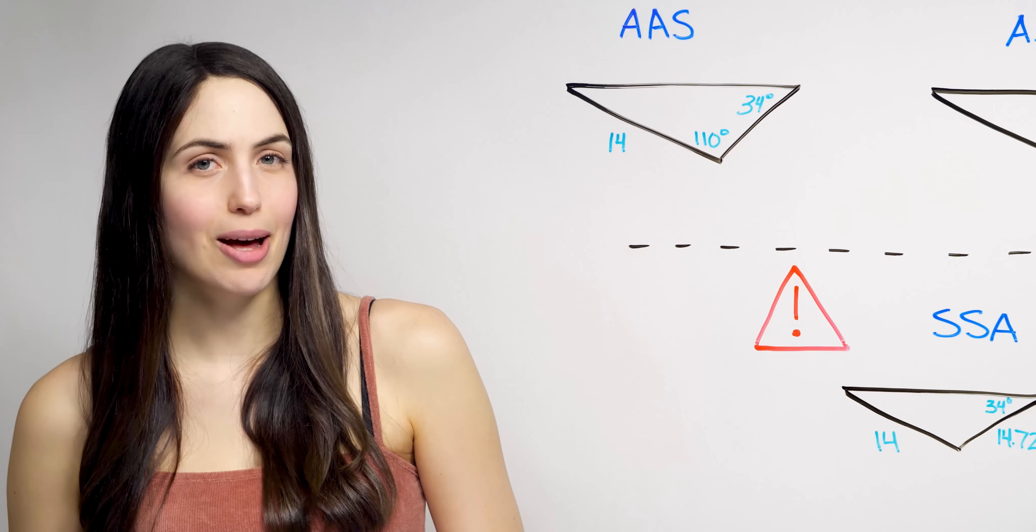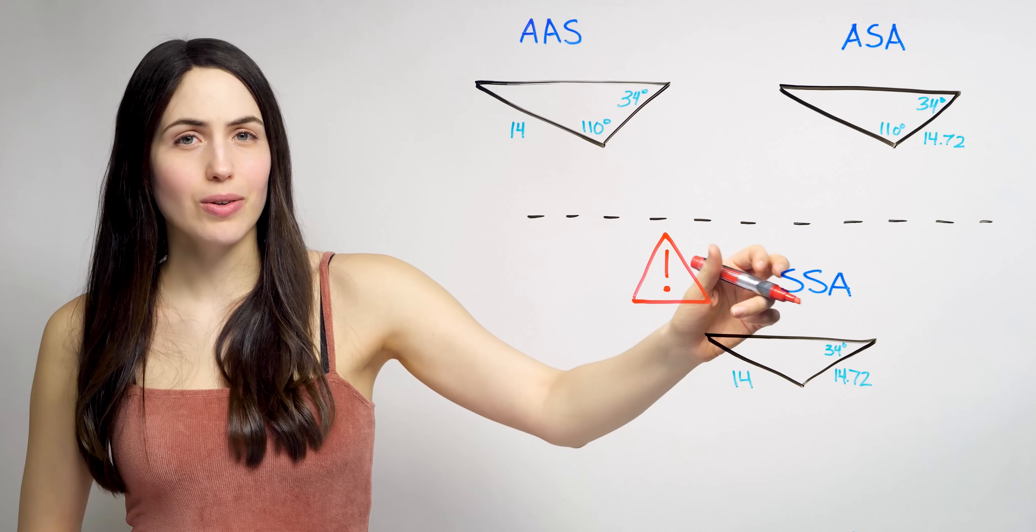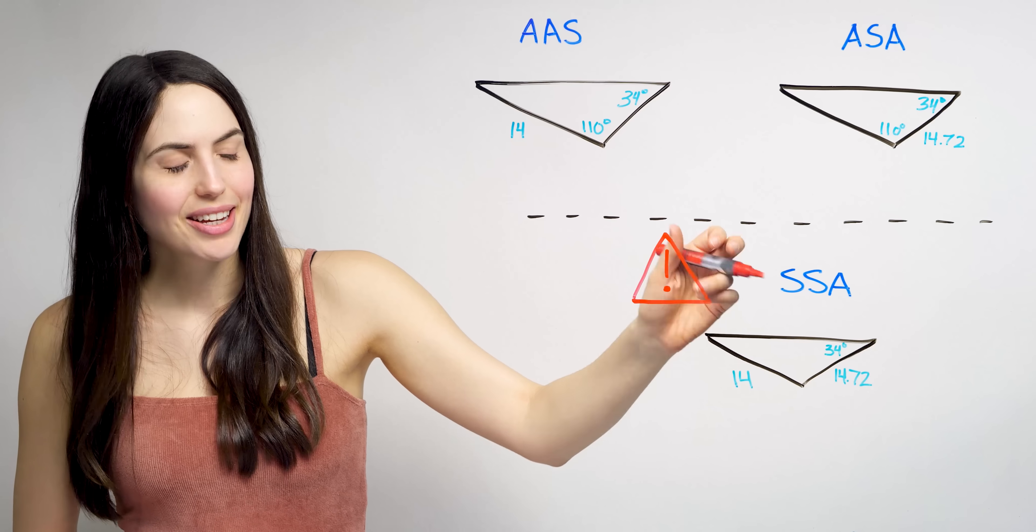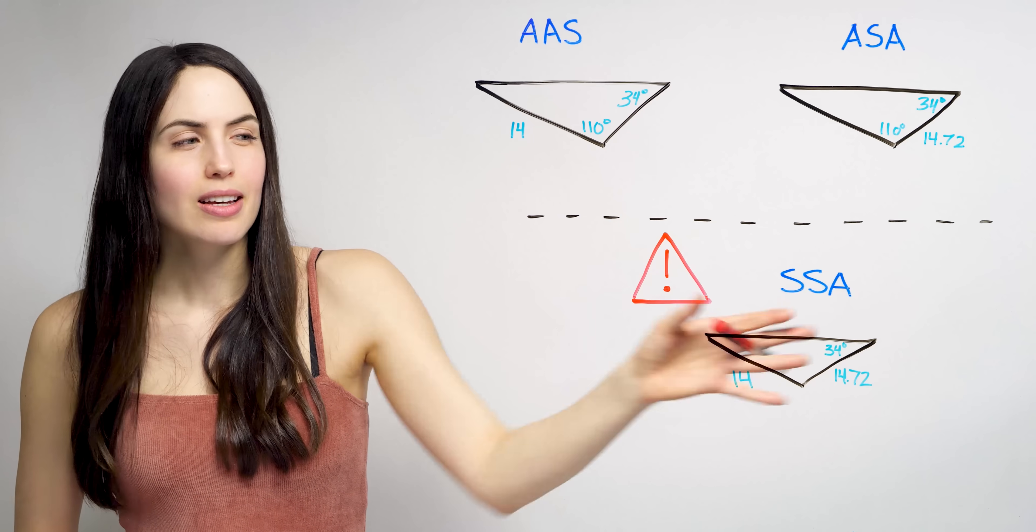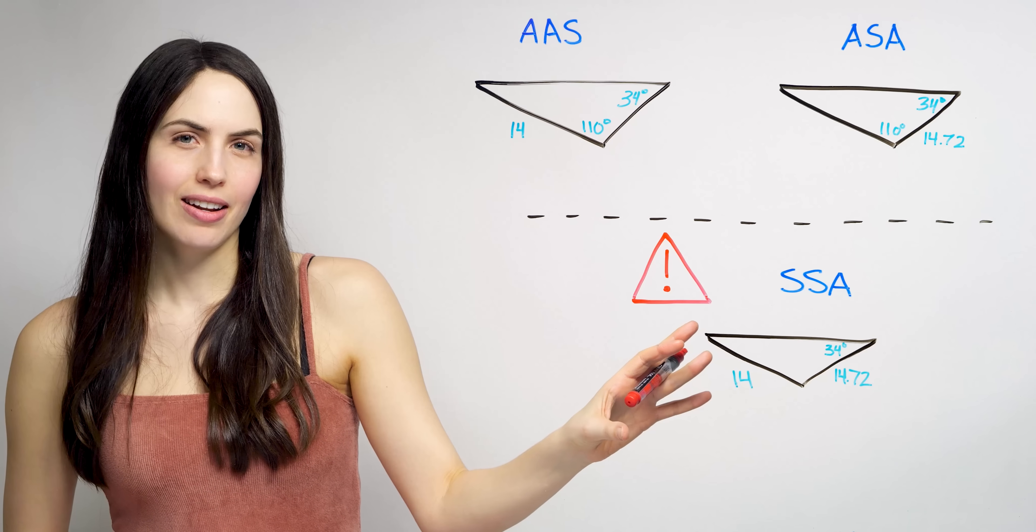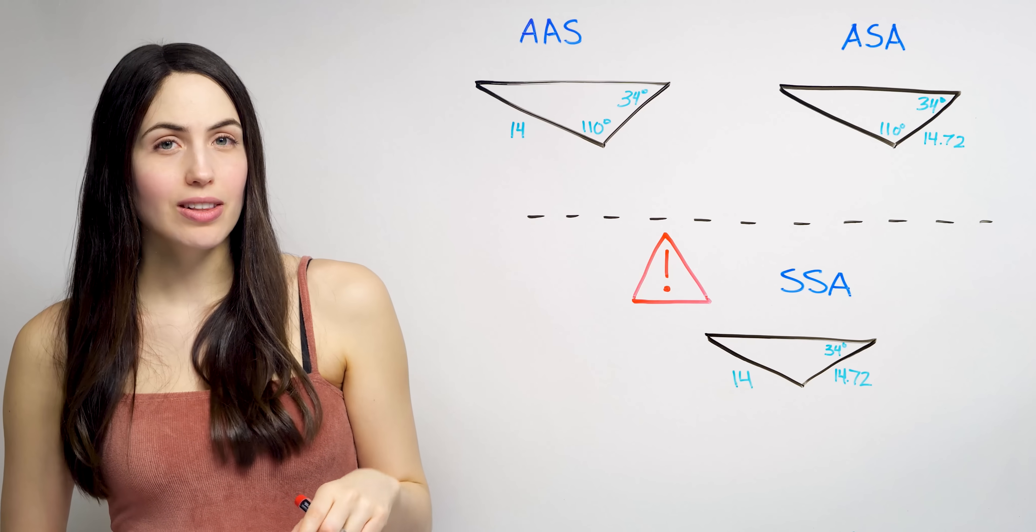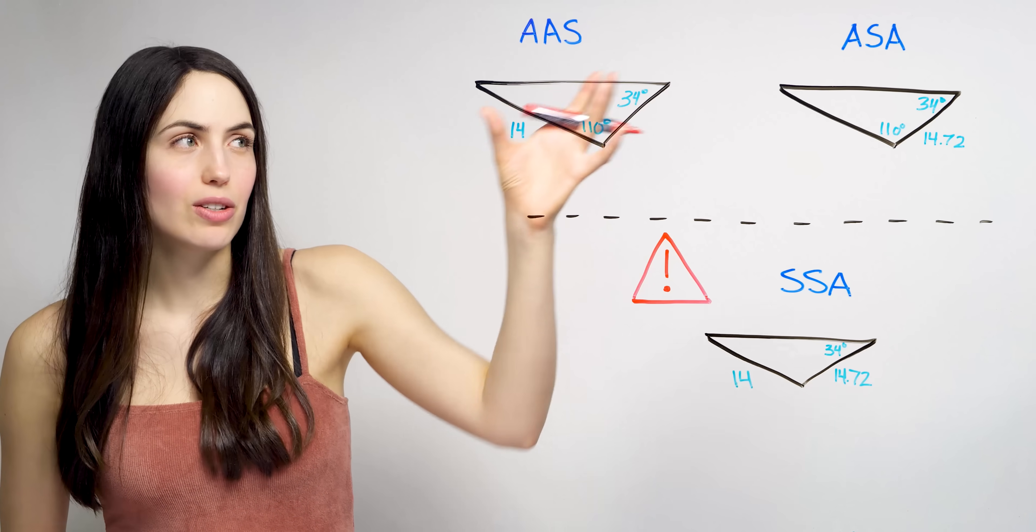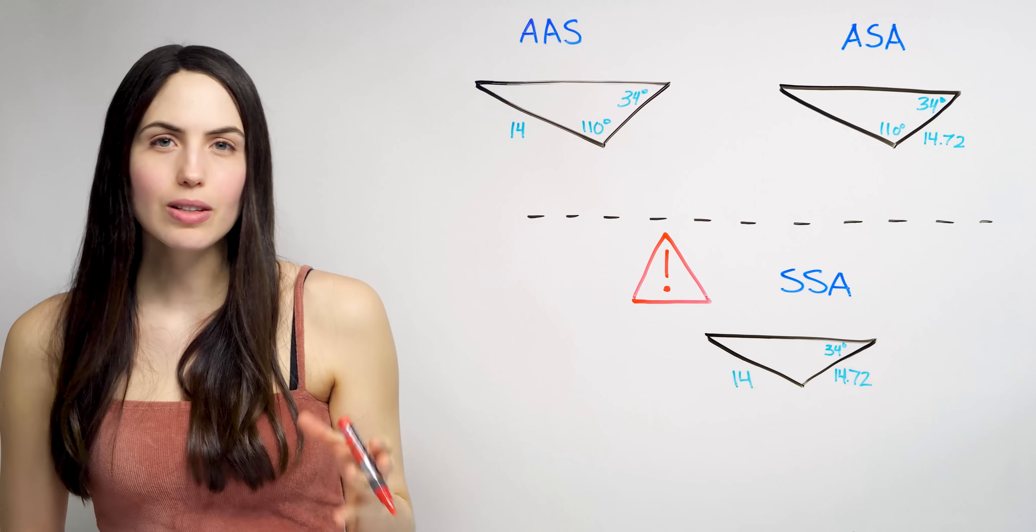Yeah, that can happen. This SSA case is also called the ambiguous case. It's very mysterious because of all the possible outcomes. It's a whole other video how to handle that. This video is an intro to law of sines. When you're given two angles in a side and there's one solution.